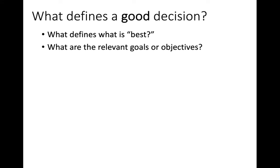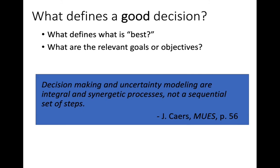Obviously you can say a decision is good, but what do you mean by that? What are the relevant goals or objectives that the decision is addressing or not? There's a quote from the book that says decision making and uncertainty modeling are integral and synergistic processes, not a sequential set of steps. As you go through the process of modeling decisions, you might realize that some of your original goals or objectives are or are not as important as you originally thought, and you might need more information to reduce uncertainty.